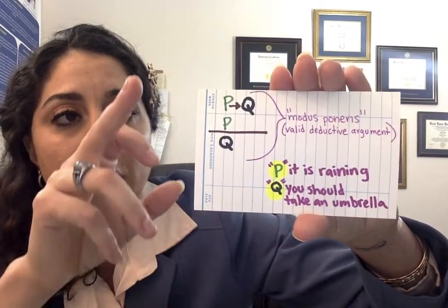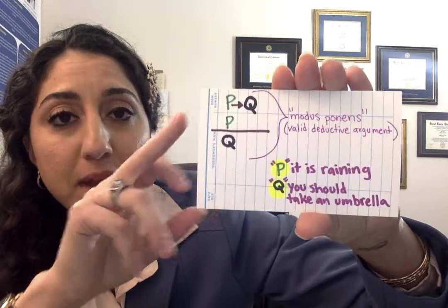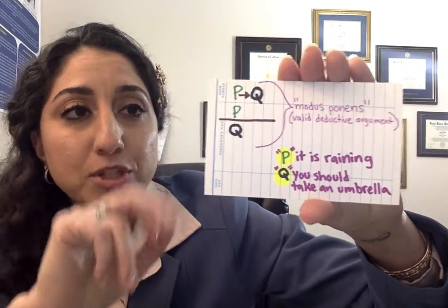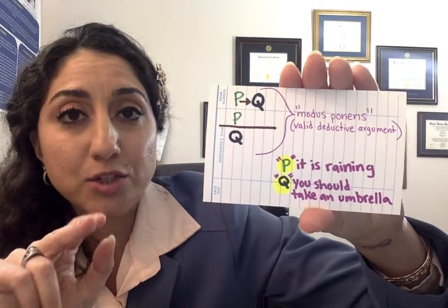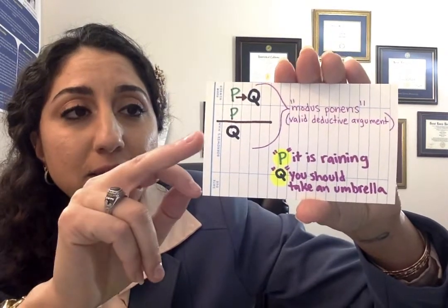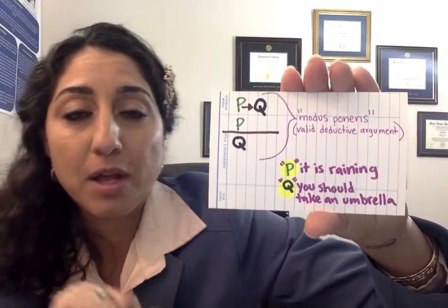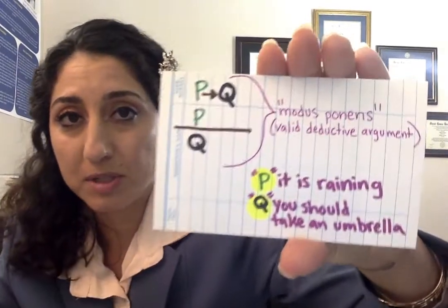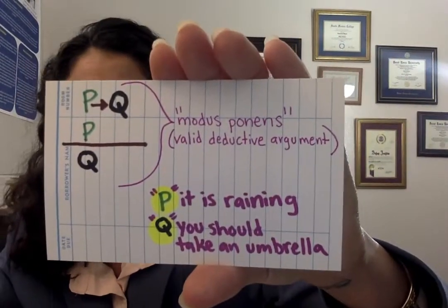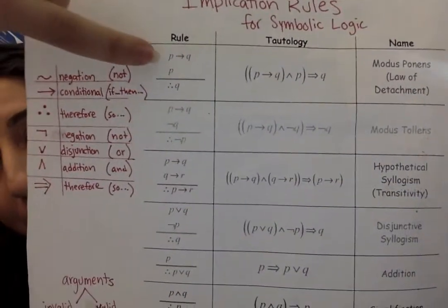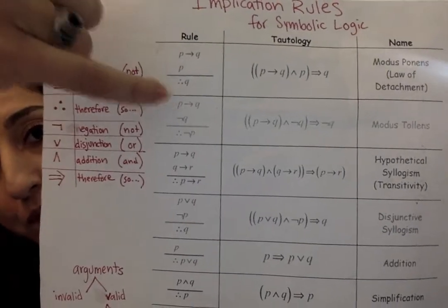In other words, premise one: if it is raining, then you should take an umbrella. Premise two: it is raining. The necessary conclusion is you should take an umbrella. This argument, called modus ponens, is just one out of many rules in symbolic logic. So: if P then Q, P, therefore Q.